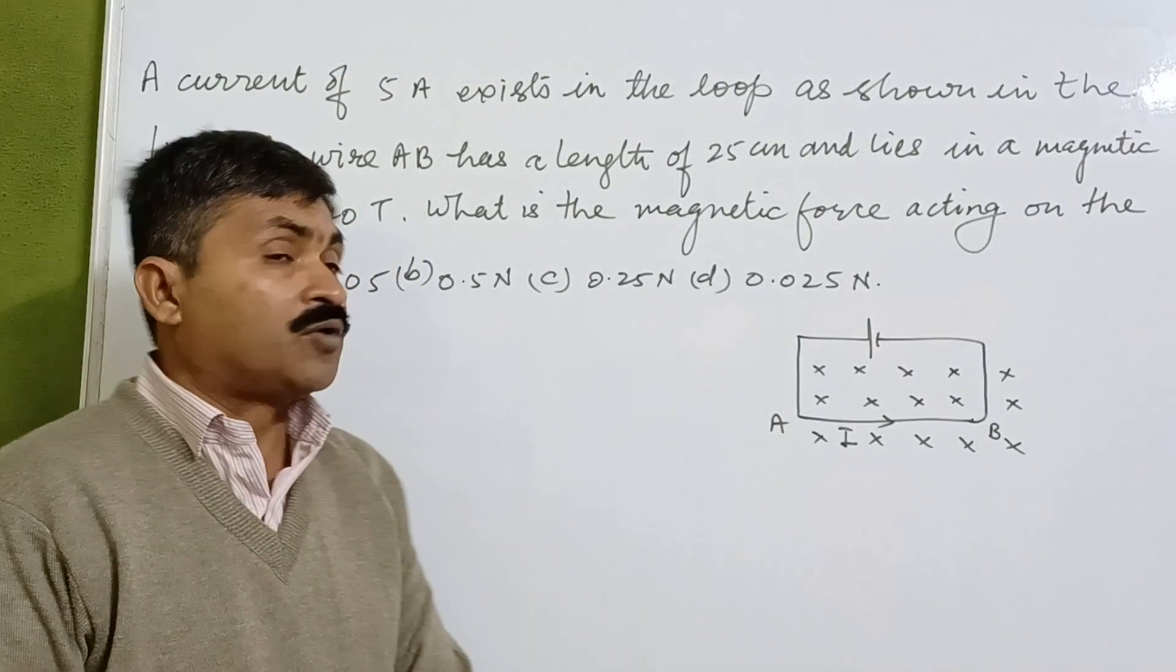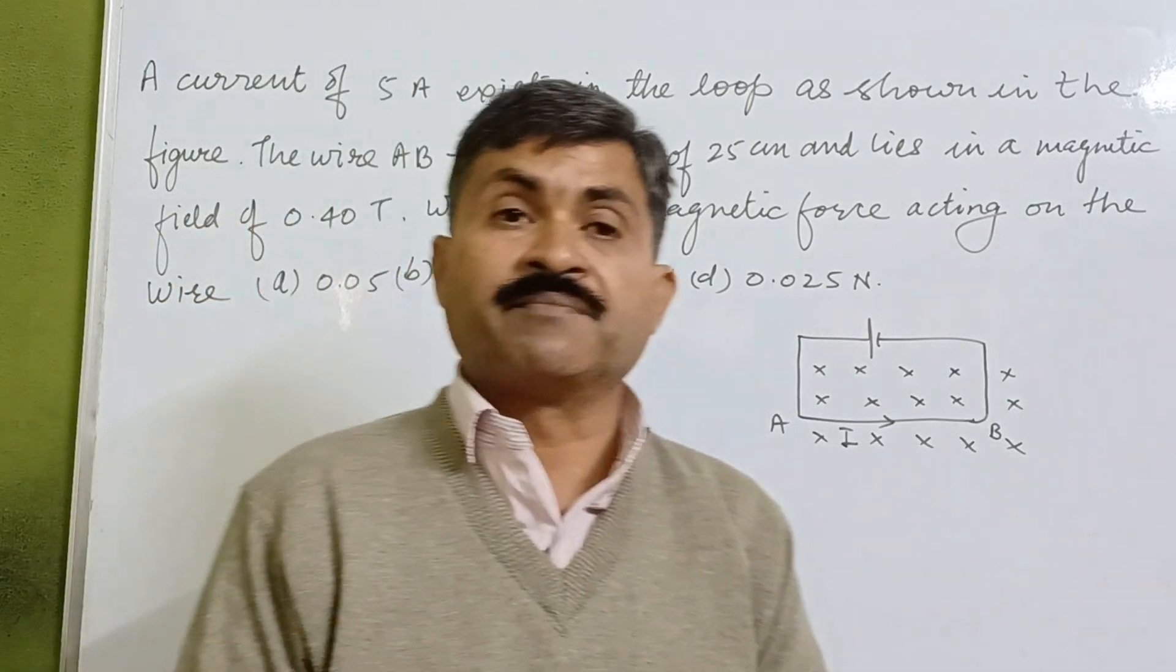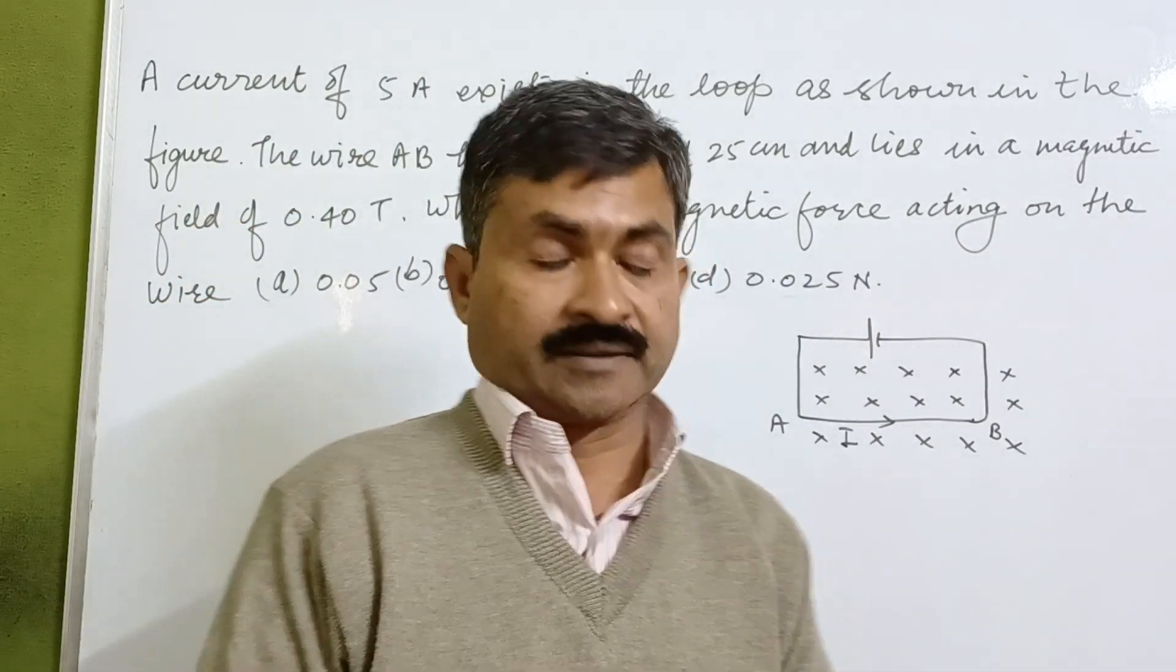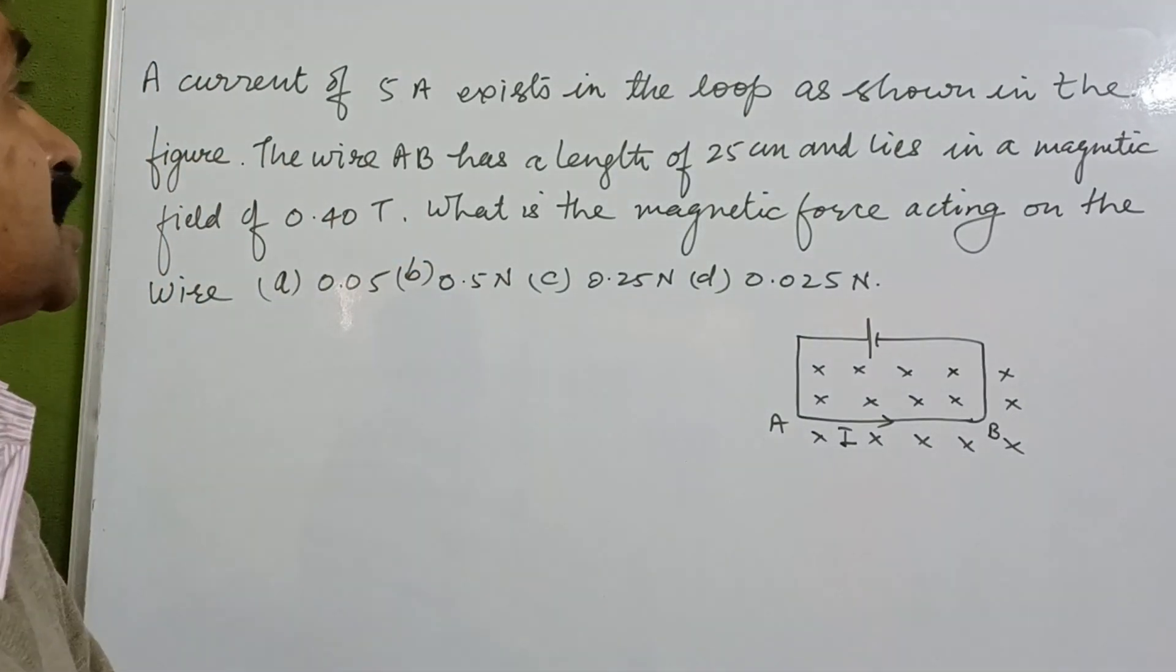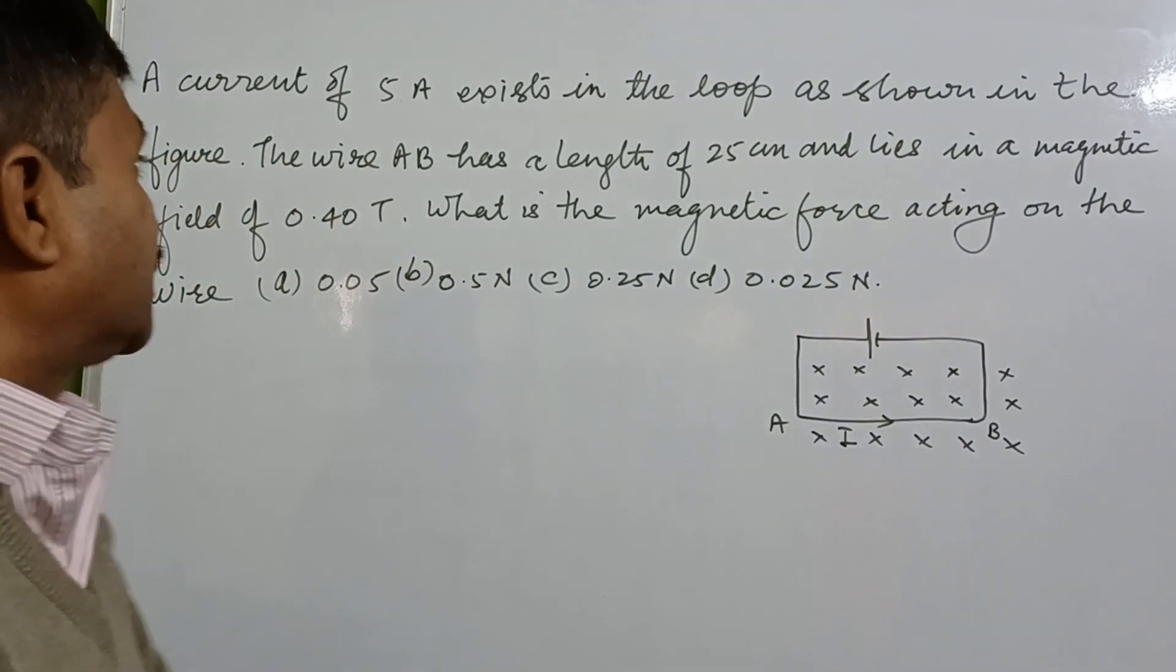Dear students, today we will solve a numerical problem based on the magnetic effect of electric current. A current of 5 amperes exists in the loop as shown in the figure. The wire